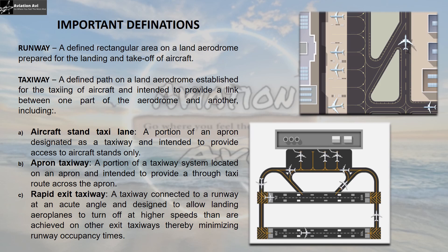Next is the rapid exit taxiway — a taxiway connected to a runway at an acute angle, designed to allow landing aeroplanes to turn off at higher speeds than on other exit taxiways, thereby minimizing runway occupancy times. Consider an aircraft landing on the runway; the probable exits are number 1 and number 2. If the aircraft vacates via the taxiway connected at an acute angle, it can exit at higher speeds. So this taxiway is the rapid exit taxiway. We have now covered all three taxiway types: the aircraft stand taxiway, the apron taxiway, and the rapid exit taxiway.